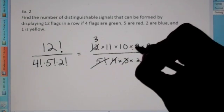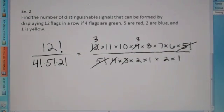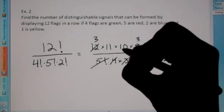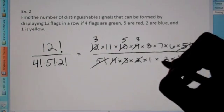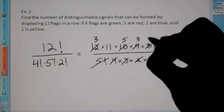I could reduce the three and the nine. That becomes a three. The two can reduce with the ten. That becomes a five. And the two and the eight reduce. That becomes a four.